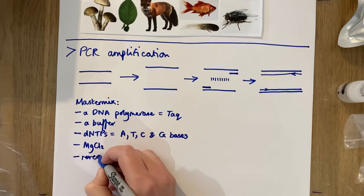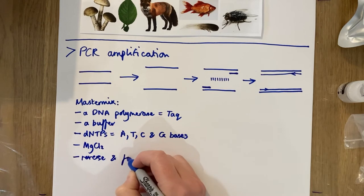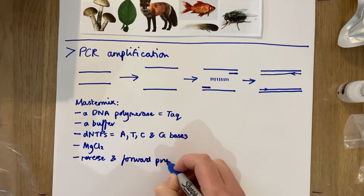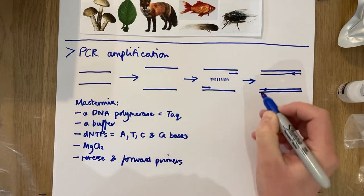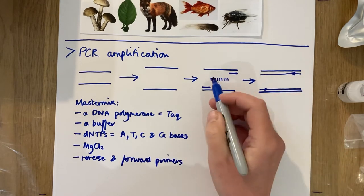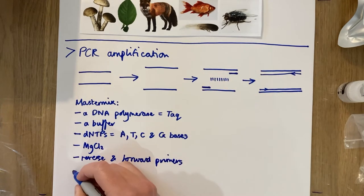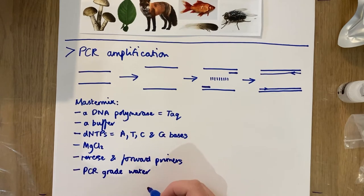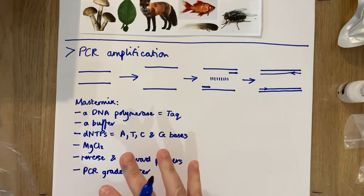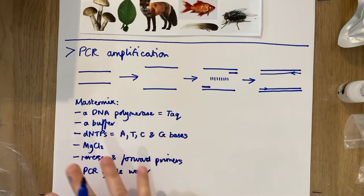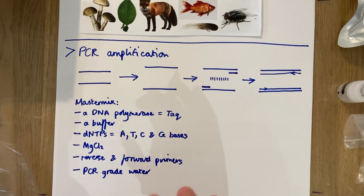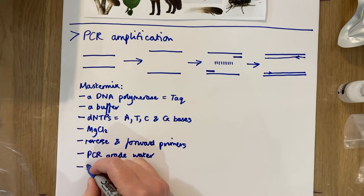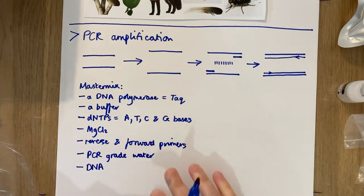You include reverse and forward primers which have been designed in advance to make sure that they anneal to the correct locations of your template DNA in order to span the region you're interested in. Then you top it up with PCR-grade water, which ensures that every component in your master mix is at the correct concentration to function, and finally you add your DNA from step one.